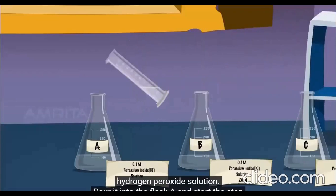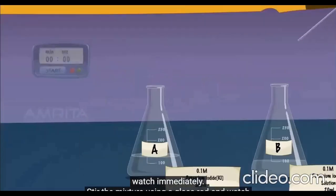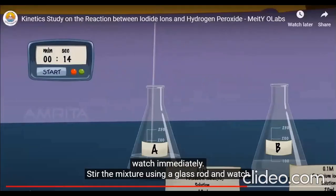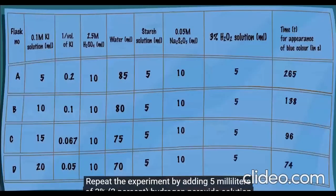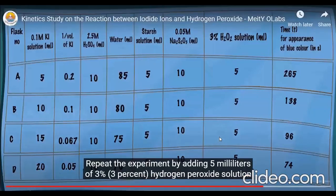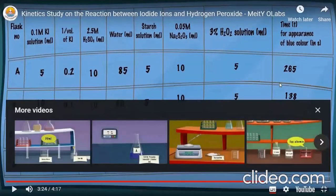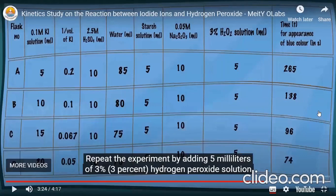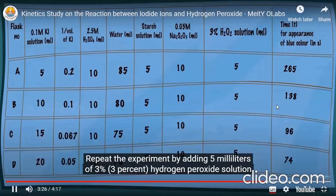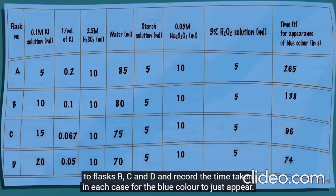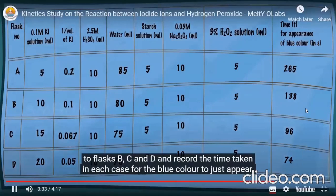Repeat the same procedure for the remaining flasks. Then take 5 milliliters of 3% hydrogen peroxide solution and pour it into flask A. Start the stopwatch immediately. Stir the mixture using a glass rod and watch for the blue color to appear. Note the time when the blue color just appears. Repeat the experiment for flasks B, C, and D and record the time taken in each case for the blue color to appear.